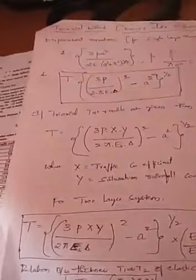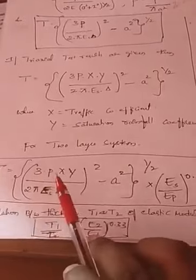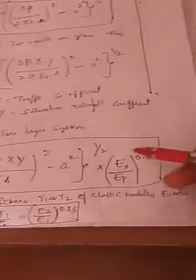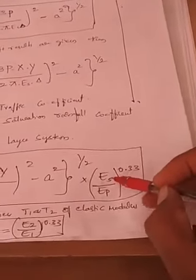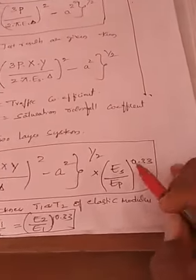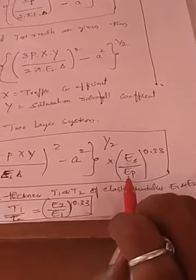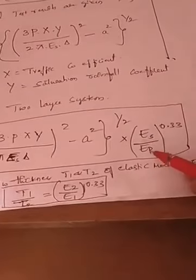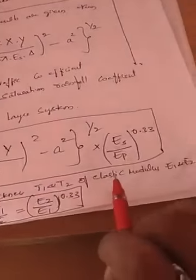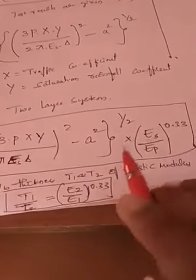For a two-layer system, the pavement equation is further modified as: T equals the square root of [(3PXY divided by 2·pi·E_s·delta)² minus a²] multiplied by (E_s divided by E_p) raised to 0.33, where E_s is the modulus of elasticity of the bottom layer and E_p is that of the top layer. The relation between thicknesses T1 and T2 and elastic moduli E1 and E2 is: T1/T2 equals (E2/E1) raised to 0.33.